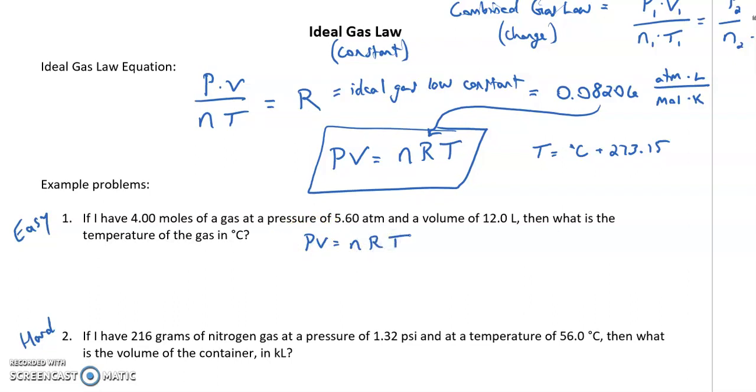my R value. So I can just straight plug them in. I've got a pressure of 5.60 atmospheres times a volume of 12.0 liters equals my moles, 4.00 moles, times my R value, 0.08206 atmospheres times liters divided by moles times Kelvin, which leaves temperature as my unknown.